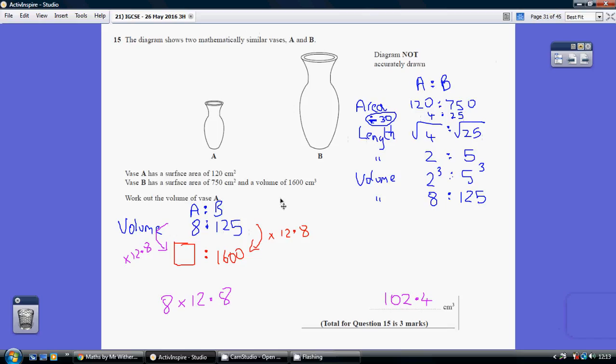We're told the volume of B is 1,600. We're trying to work out the volume of A. So, how do we get from 125 to 1600? We multiply by 12.8. So, we need to multiply the 8 by 12.8, 102.4.